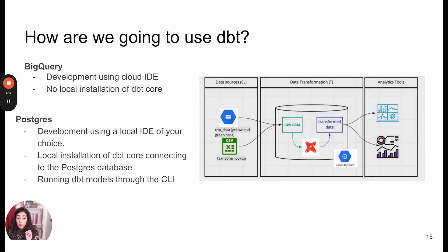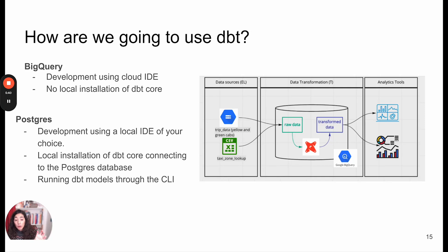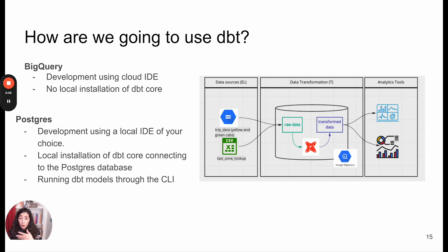We are going to be using two ways. The videos will always have a version A and a version B. Version A, which is the main one I'll be using, is BigQuery — so the data warehouse you may already have in place — and we're going to use the cloud IDE, using a dbt Cloud developer plan which is free. You can create your account at no cost, and this means we don't have to install anything locally unless you want to. The second option is to use Postgres, where you'll do all the development using your local IDE, maybe VS Code or something like that, and you're going to install dbt Core locally. Then we'll have to handle orchestration and all of that separately.